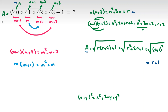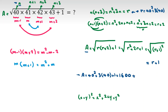Now we calculate r. Since n equals 40, r equals 40 squared plus 3 times 40. So the answer a equals 40 squared plus 3 times 40 plus 1. That is 1600 plus 120 plus 1, which gives us 1721.